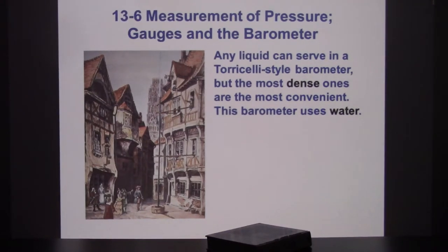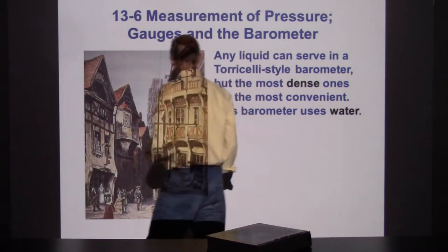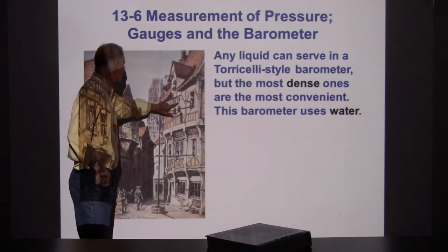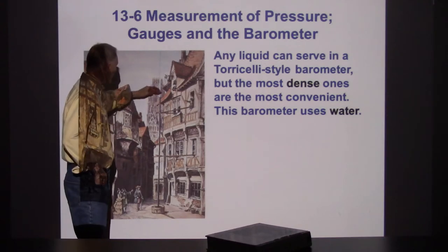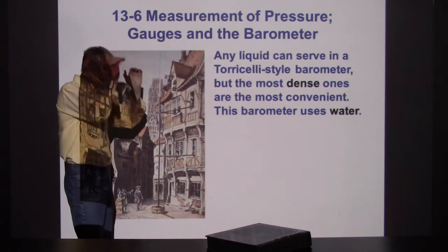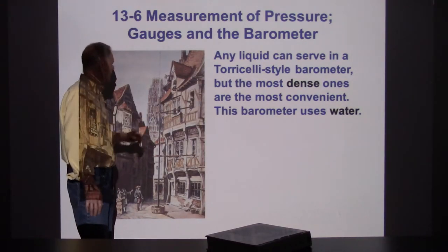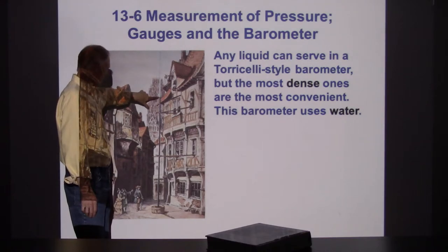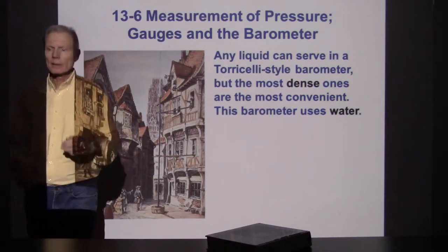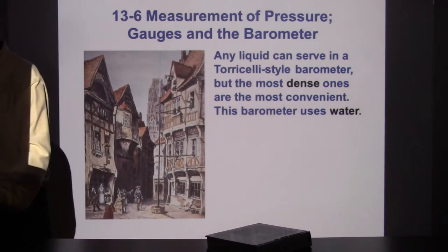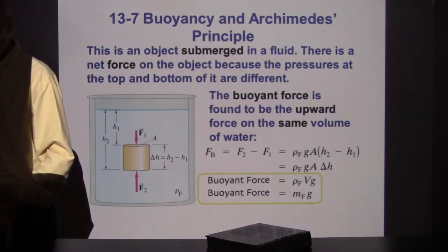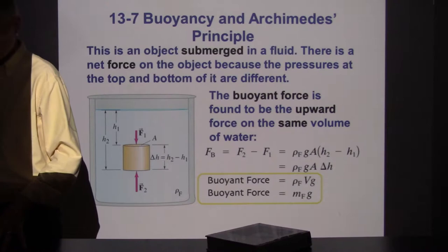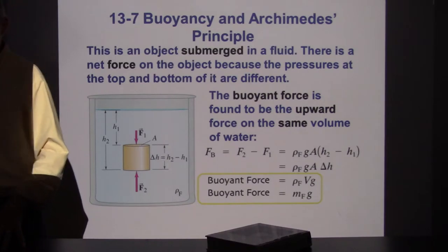All right, back from break. So we were just taking a look at this water barometer that is 10 meters high, and someone up here has to be able to look out, maybe get some binoculars, and see how high the water level is today. The higher level indicates a higher atmospheric pressure. Let's move on and take a look at some other very important items here.